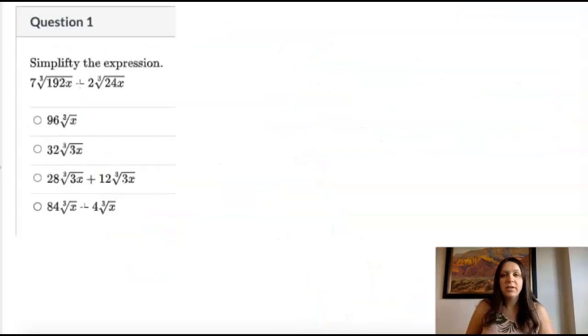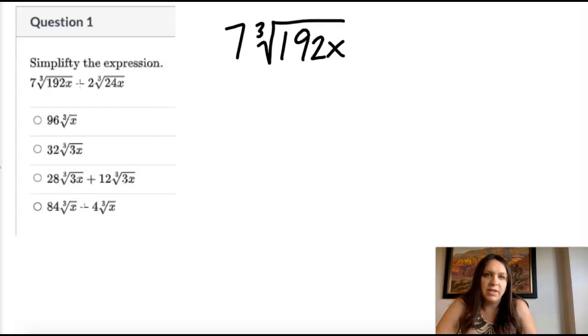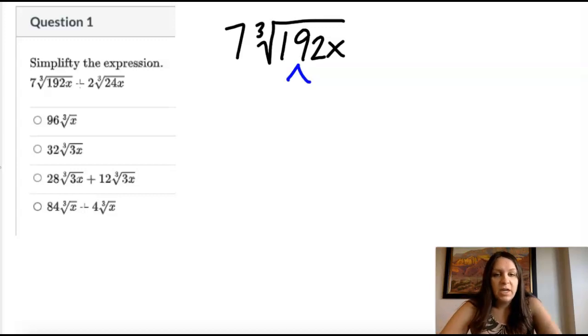Okay, I'm going to do one more. This was the very first question on the self check I opened. So when we see these, we have to simplify before we can combine. So I'm going to take seven cube root of 192 x. And we just have to start getting factors.